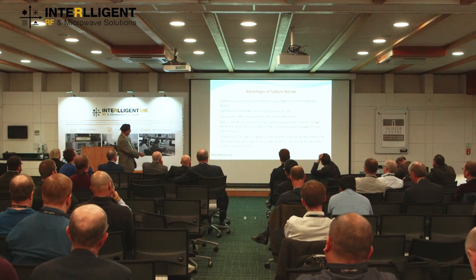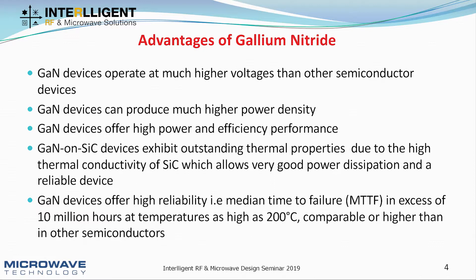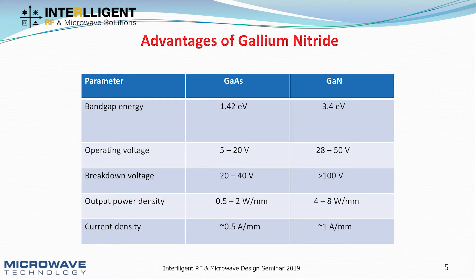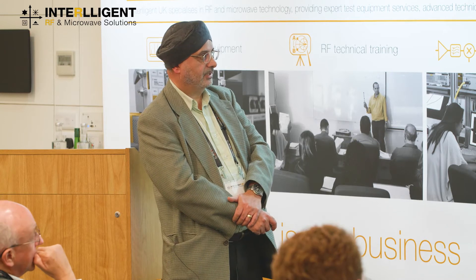The important thing is also the reliability — the MTTF, or median time to failure, is in excess of 10 million hours at an operating temperature of 200 degrees, which is comparable to other semiconductor devices. This slide shows the main advantages going from GaAs — the established technology — to GaN. The key parameters are band gap energy, operating voltage, breakdown voltage, output power density, and current density. Importantly, the power density per millimetre watt you can achieve from a GaN device is significantly higher, and these devices typically run from 28 volts up to 50 volts.